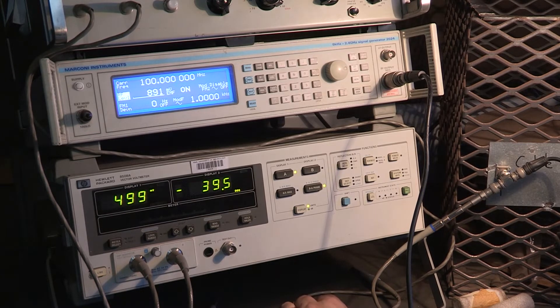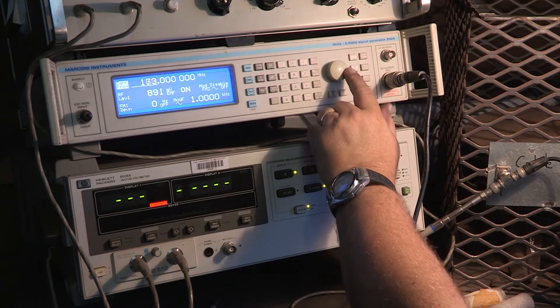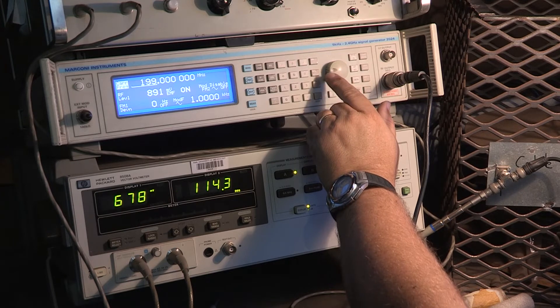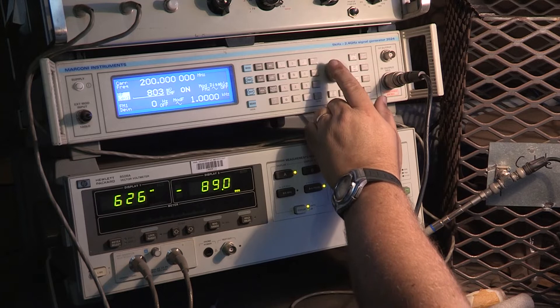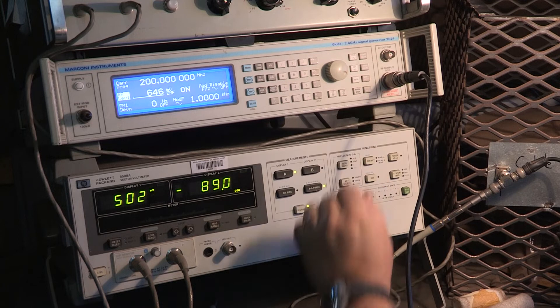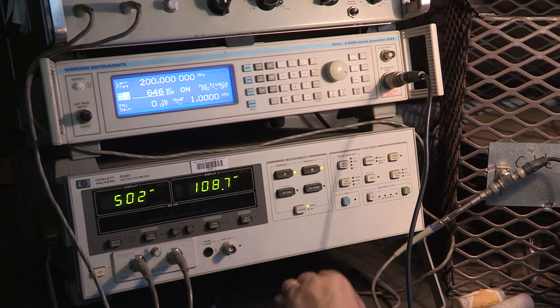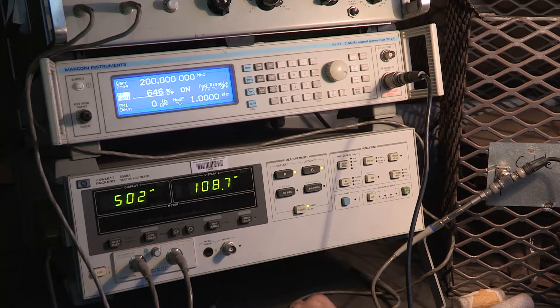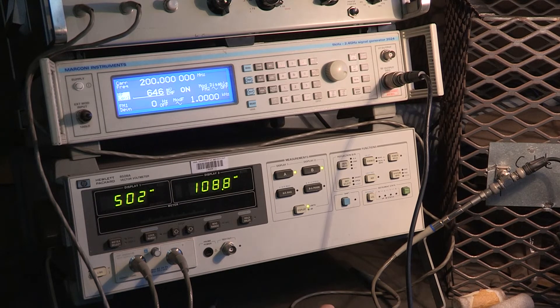The next frequency on my list is 200 megahertz. Need to adjust it back to 500 millivolts so that we can compare apples to apples. Your graphs will be in dBs. The angle now minus 98, almost 90 degrees, and the amplitude 108.7. So we start seeing a decline in amplitude and an increase in the phase angle.